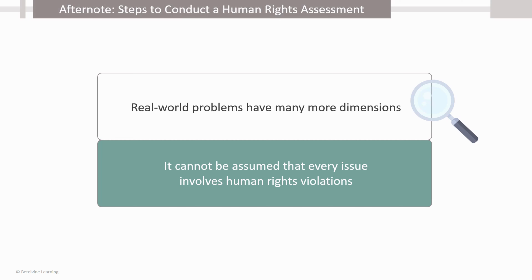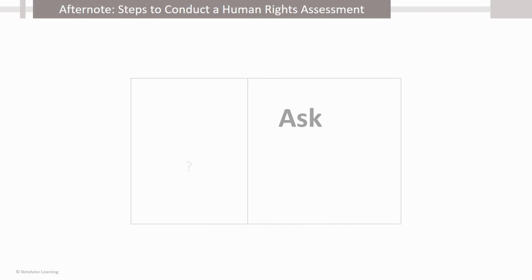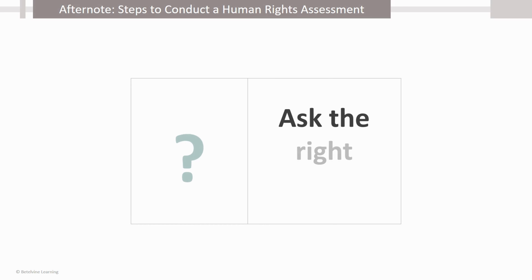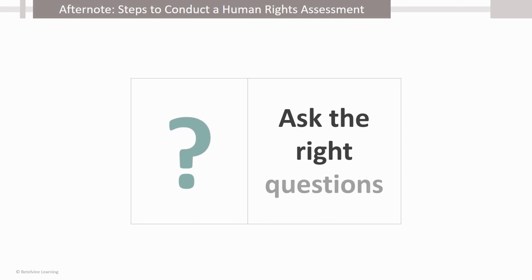Such failure encourages corruption to continue and flourish. Thus, we have to carefully ask questions to identify why a given case is an issue of human rights violation, or in what manner the state has failed in its obligations. These questions are necessary as they also help in identifying targeted measures that need to be taken to address the violation.